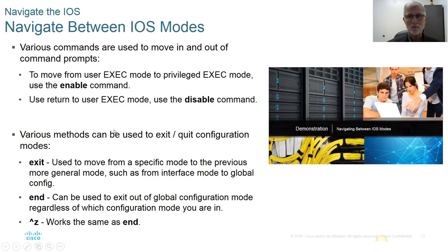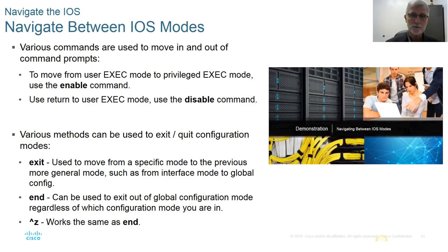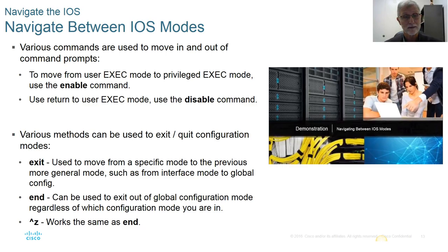To navigate between modes: to move from user mode to privileged mode, use the enable command; to get out, type disable. You can type exit to move from a more specific mode back up to a more generic mode — for example, from interface back to global. You can type end or use Ctrl+Z to get out of global configuration mode entirely, no matter what level you're at. The more you work with this, the more you'll use keyboard shortcuts — Ctrl+Z is a key one.